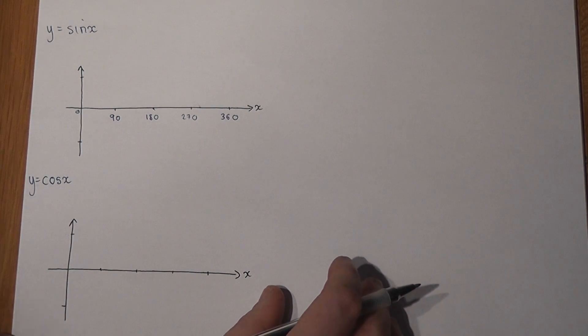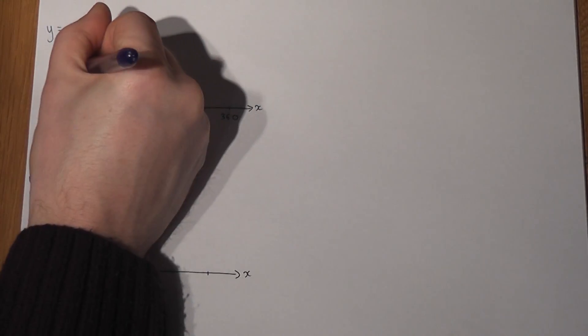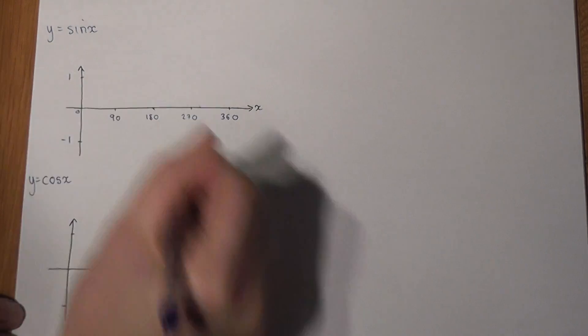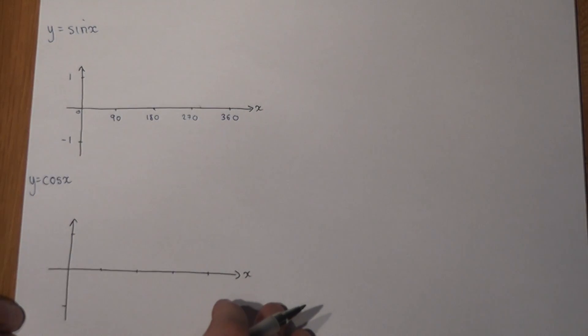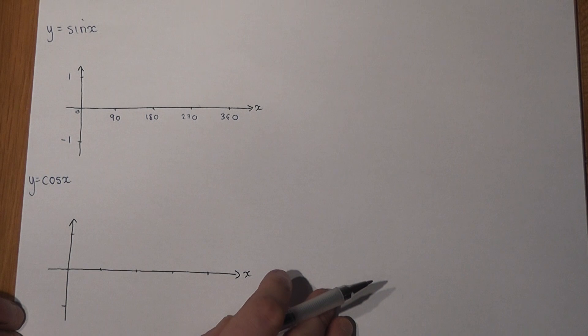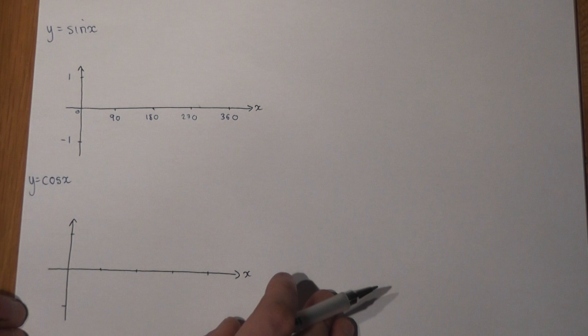And the graph goes up to 1 and down to minus 1. So these are the key labels to remember before we start to sketch the graph.